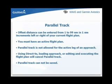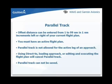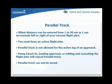The parallel track function has been added to WAAS units. This function allows the user to create a parallel course offset from the flight plan course. Key features include: the offset distance can be set from 1 to 99 nautical miles in 1 nautical mile increments; the offset can be left or right of the flight plan course; you must have an active flight plan; and the parallel track will not be available with an active instrument approach leg. Editing or executing a flight plan, using the direct-to key, or loading an approach will deactivate the parallel track function. It is not possible to save the parallel track in the flight plan catalog.